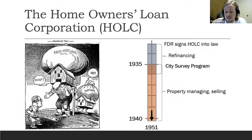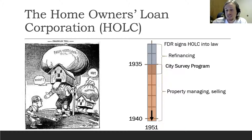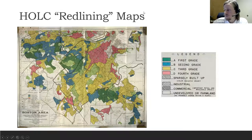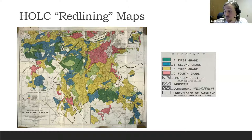The City Survey Program sent out neighborhood appraisers — many of whom were regularly employed in real estate or lending — into the field across hundreds of cities in the United States. They collected a massive amount of data and built up maps where they rated neighborhoods on the risk they posed to property investors. Here's the HOLC redlining map for Boston. The field agents used a four-grade schema going from A, considered the best neighborhoods with the lowest risk, down to D, colored red, considered the riskiest.